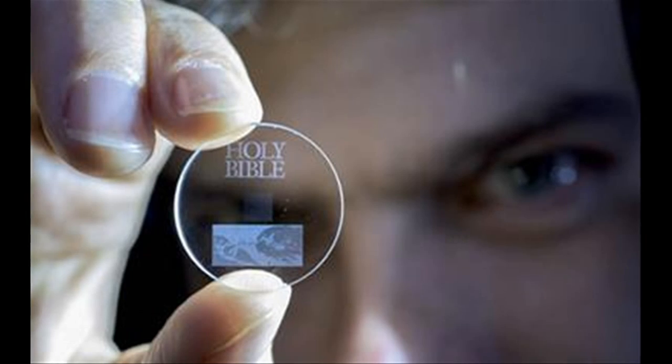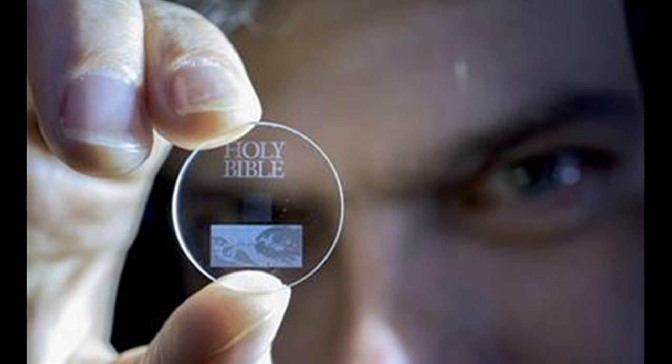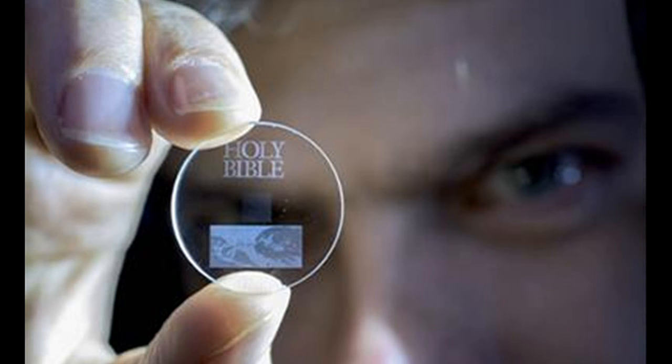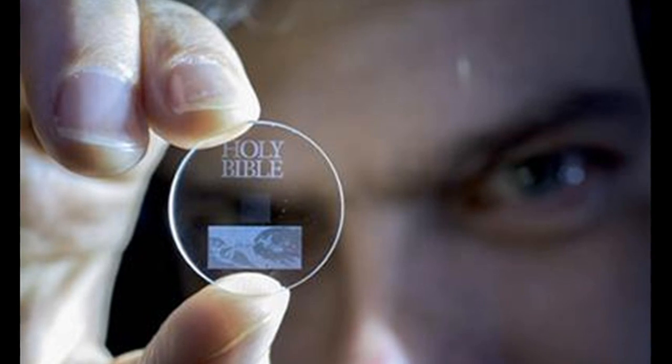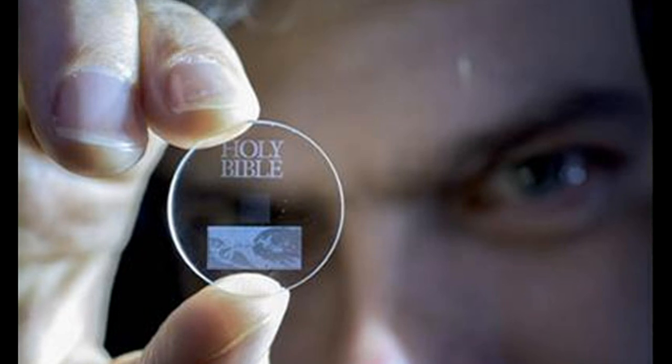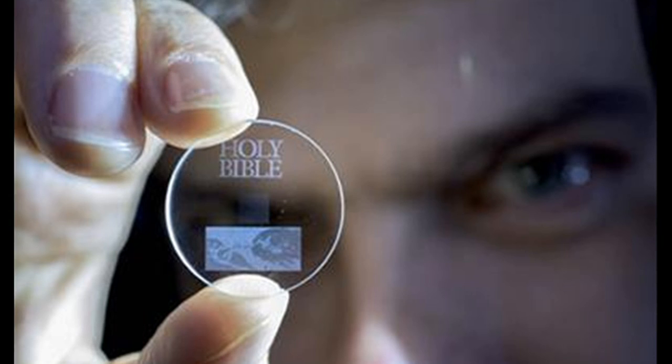The self-assembled nanostructures change the way light travels through glass, modifying polarization of light that can then be read by combination of optical microscope and a polarizer, similar to that found in polarized sunglasses.